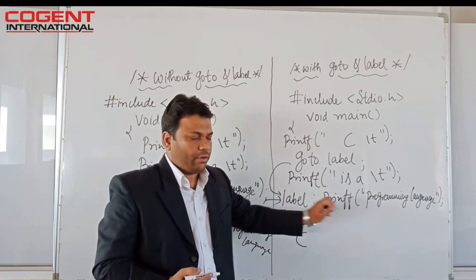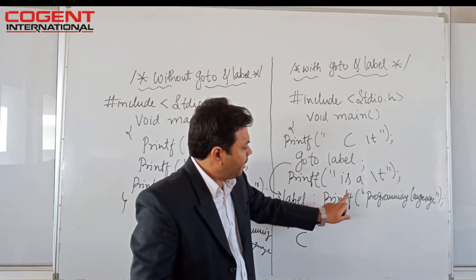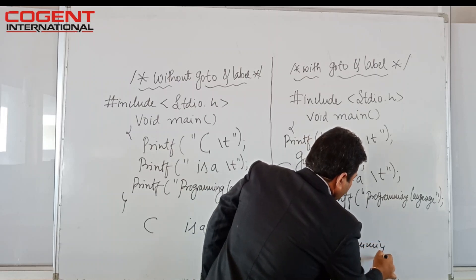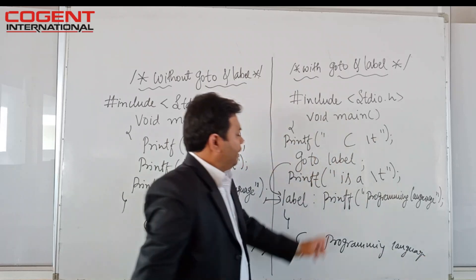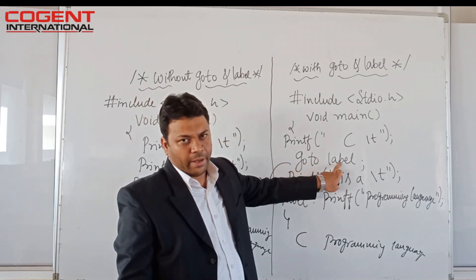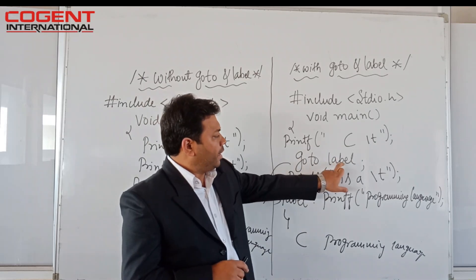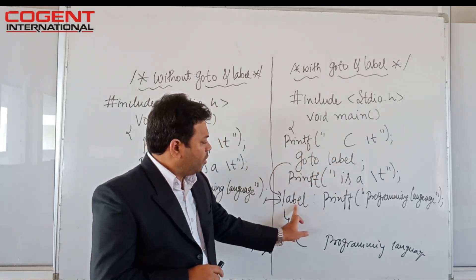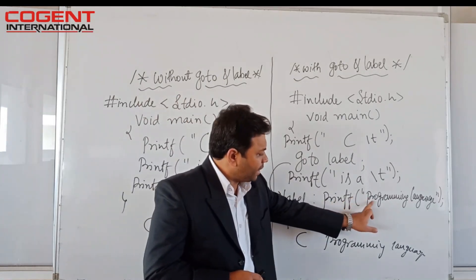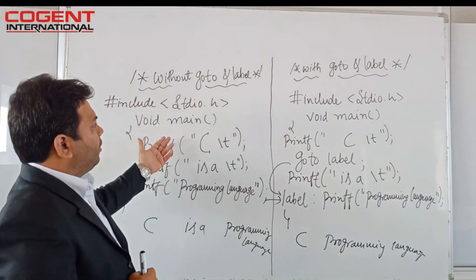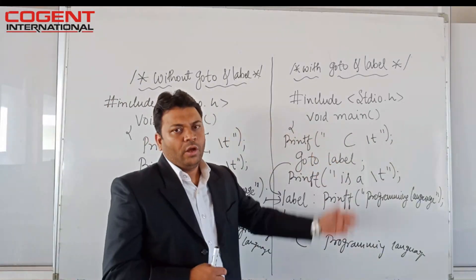Whatever statements are included under that label will execute. The label statement is printf 'programming language', so it prints 'programming language'. The middle statement is skipped when goto is used — it transfers the control of execution to the label and executes from there. That is the output of this program with goto.